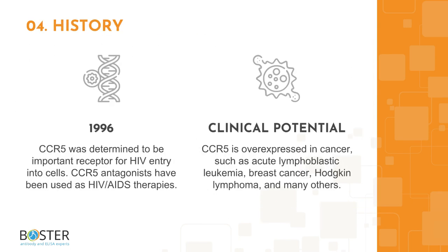Topic 4: some interesting facts about CCR5. In 1996, CCR5 was found to be an important receptor needed for HIV entry into cells. Since this discovery, CCR5 antagonists have been used as HIV-AIDS therapies.